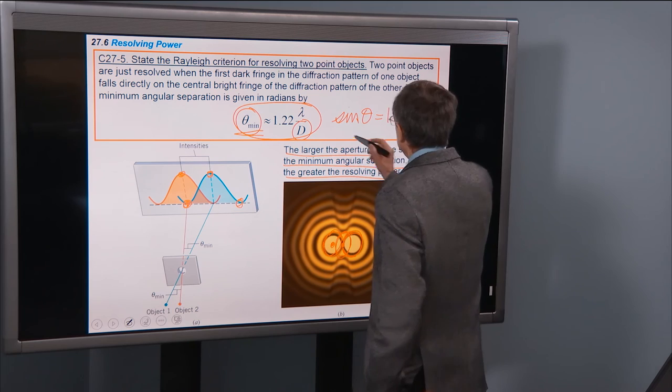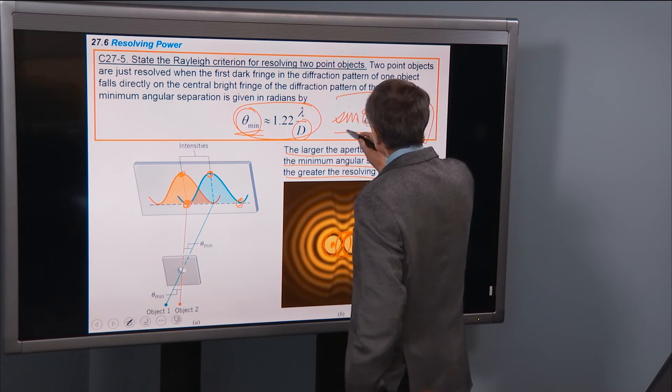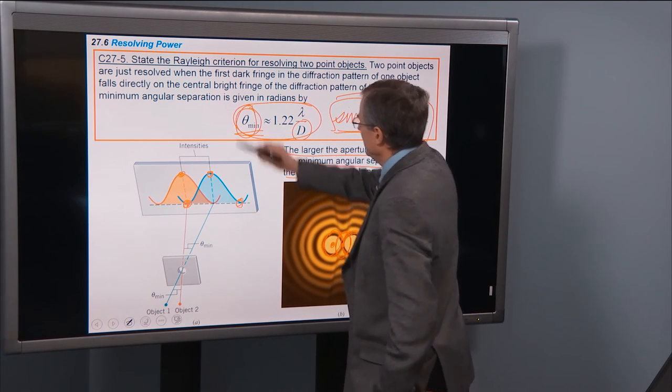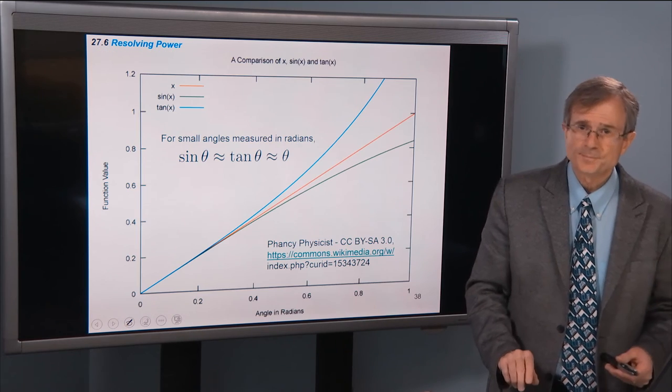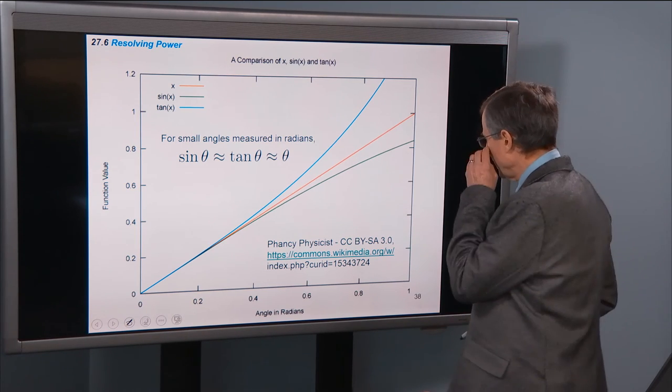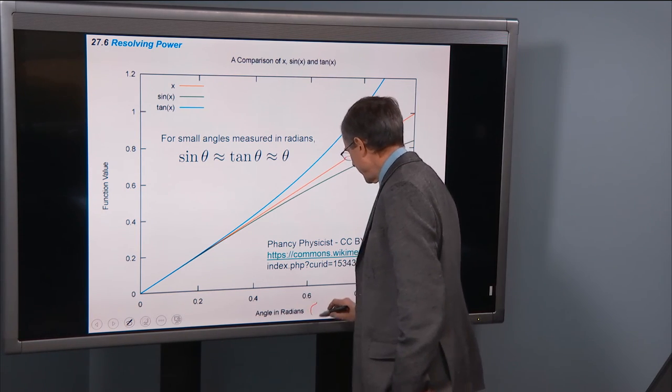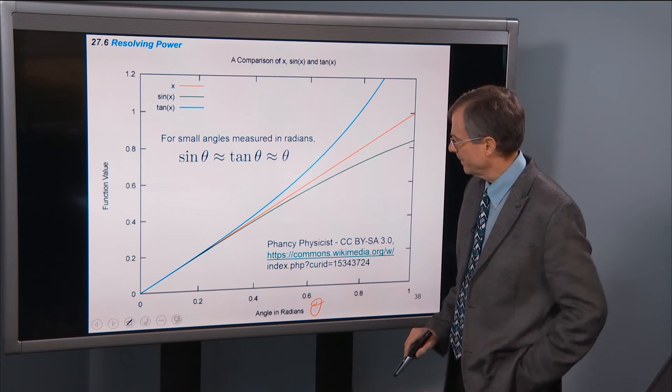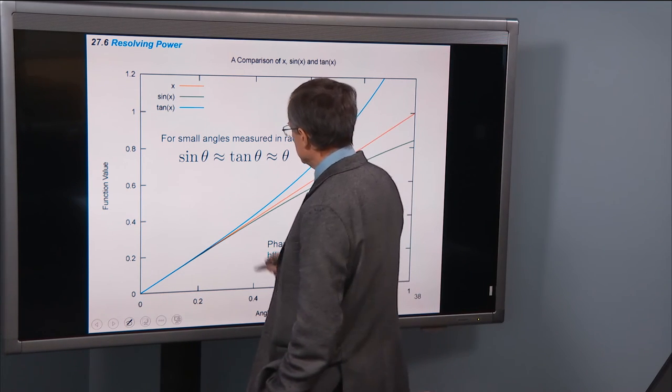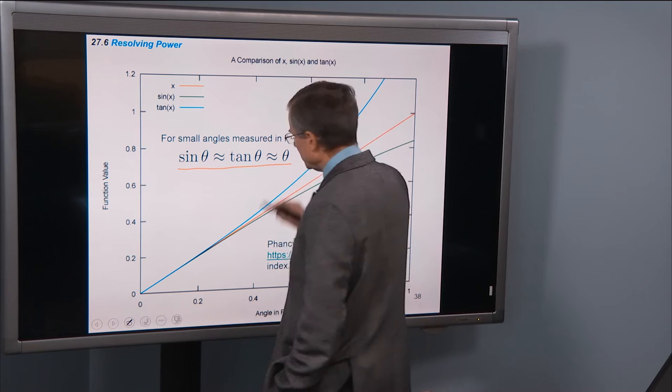All right, so sine theta, how do we replace sine theta with theta? And the answer is that for very small angles, so this is the angle theta measured in radians, the sine of theta is approximately equal to theta.